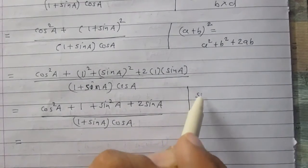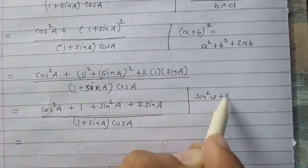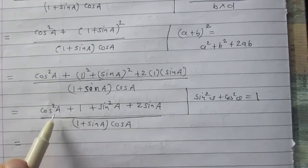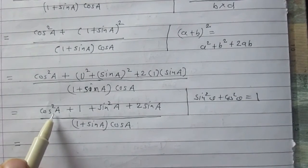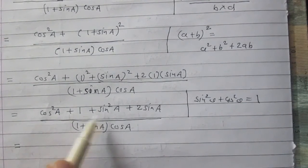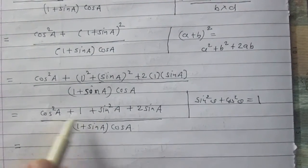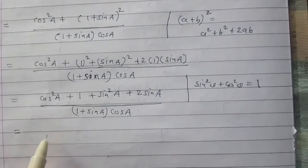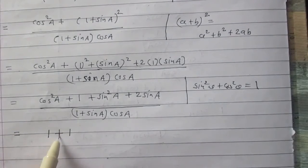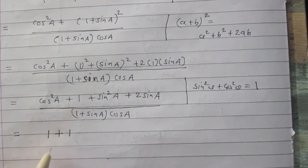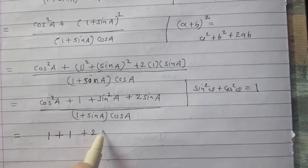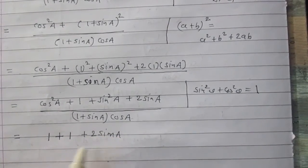We know the identity: sin squared theta plus cos squared theta is equal to 1. Similarly, cos squared A plus sin squared A will become 1. So the addition of these two terms gives 1, and then we have another 1, plus twice of sin A.